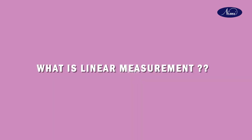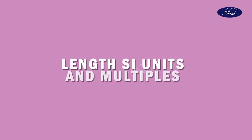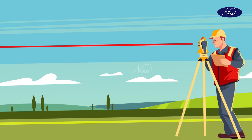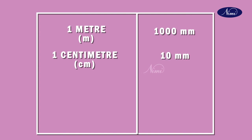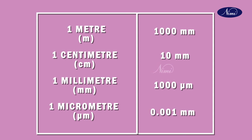What is meant by linear measurement? Linear measure is defined as measurement of length. The base unit of length as per the System International is meter. The table below lists some multiples of meter: one meter equals 1000 millimeters; one centimeter equals 10 millimeters; one millimeter equals 1000 microns; one micrometer equals 0.001 mm.